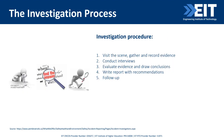Here you can see the process related to investigation. When we investigate workplace incidents, there are several important steps. First, it's crucial to visit the scene of the incident to gather and document evidence — this may involve taking photographs, collecting physical samples, or examining the surroundings. Next, conducting interviews with individuals involved or witnesses can provide valuable insights and additional information about the incident.